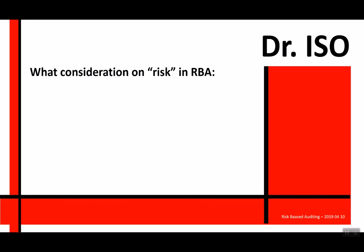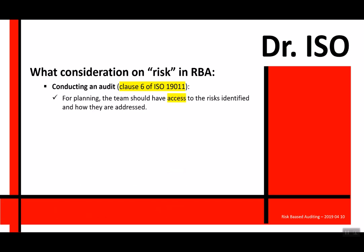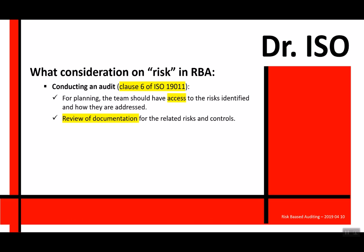Moving to Clause 6 of ISO 19011, which talks about how to conduct an audit: in order to plan a detailed audit, the team should have the right access to the risks identified for the system they are going to audit, because that is the input for detailed planning. They should conduct a detailed review of the documentation in relation to the risk and the controls applied in the organization, and they should do this homework prior to going for the audit.